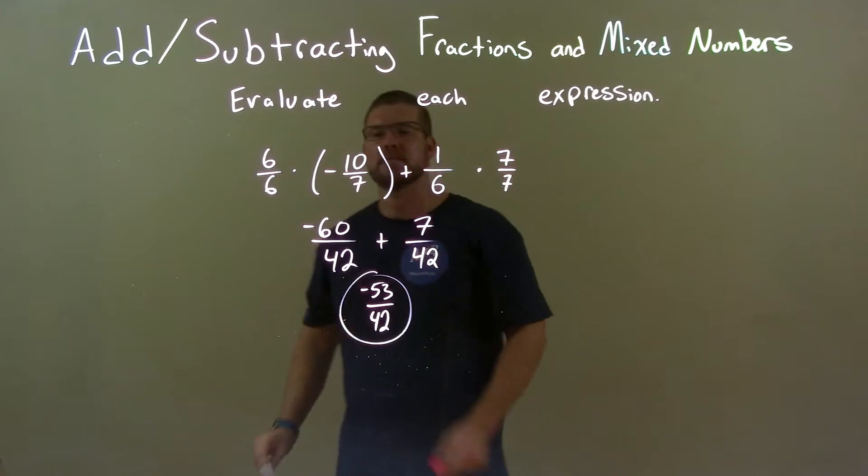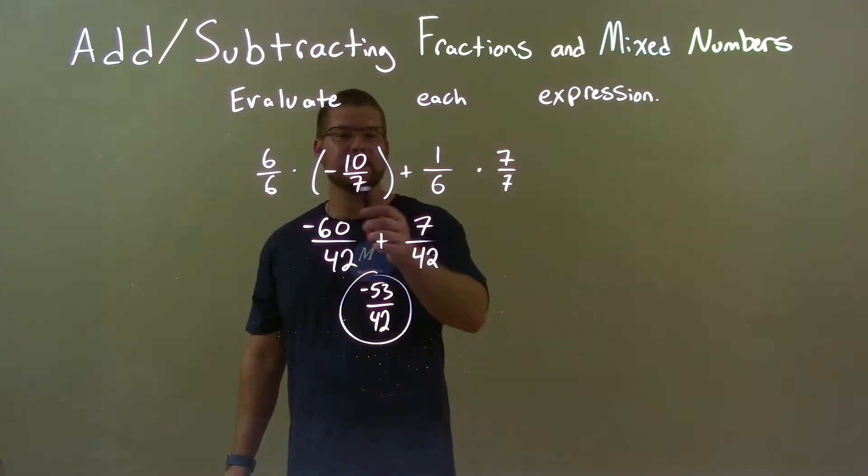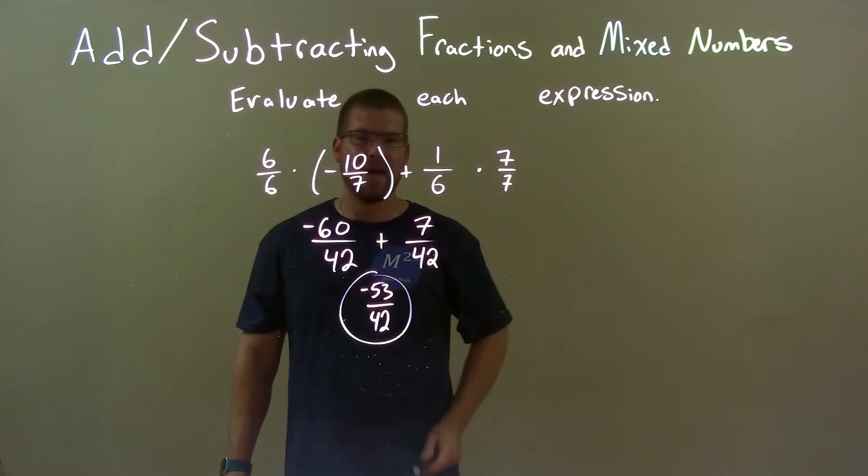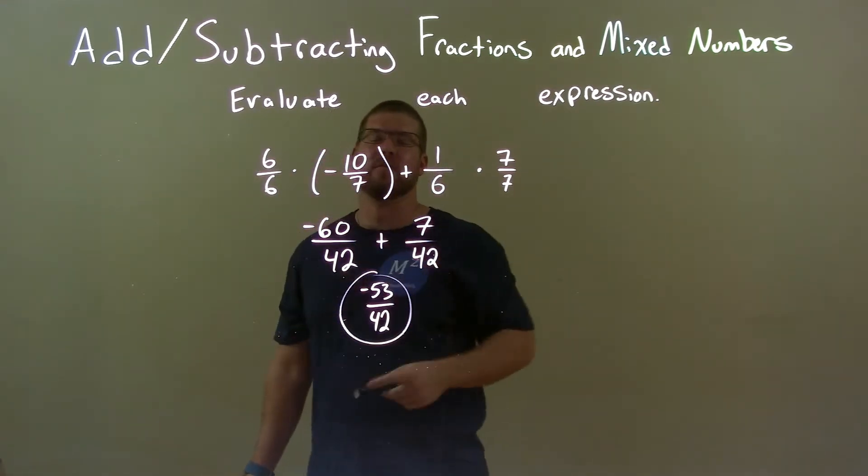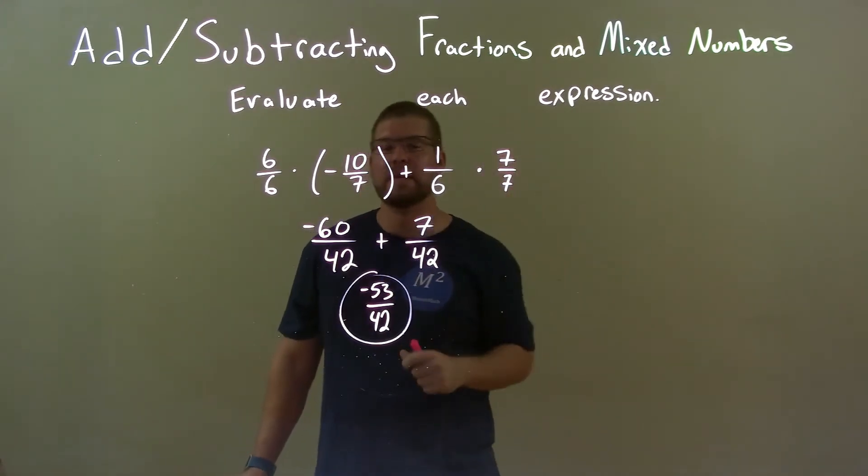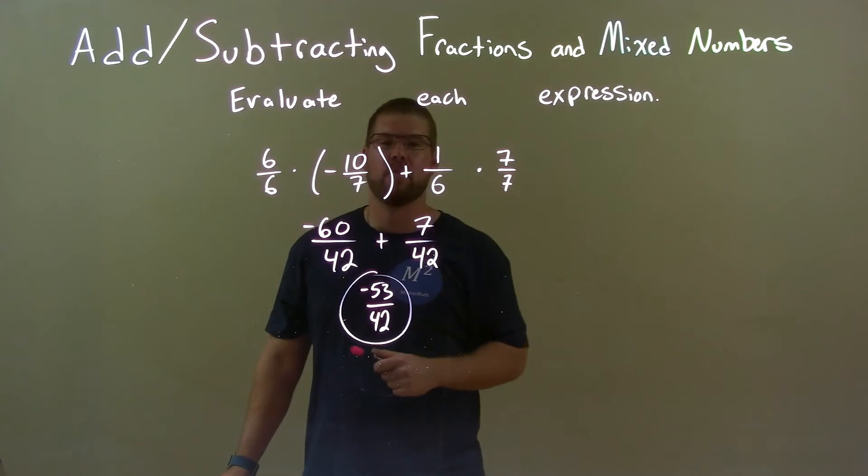So quick recap, we're given negative 10 over 7 plus 1 sixth. Well, same base is not what we have right here, so we got the same base, multiplying the first number by 6 over 6, and the second number by 7 over 7. That gave us negative 60 over 42 plus 7 over 42.